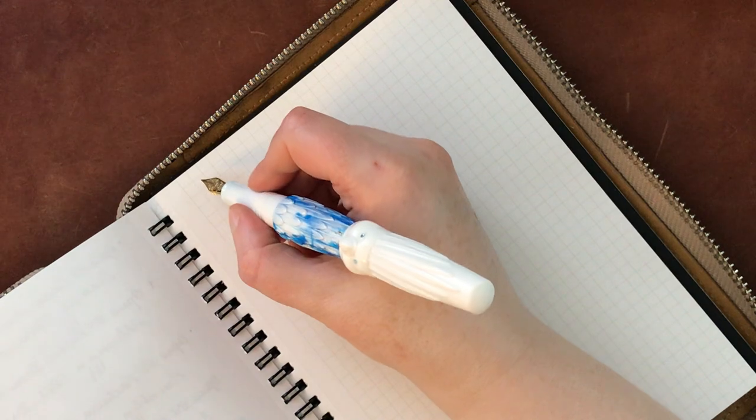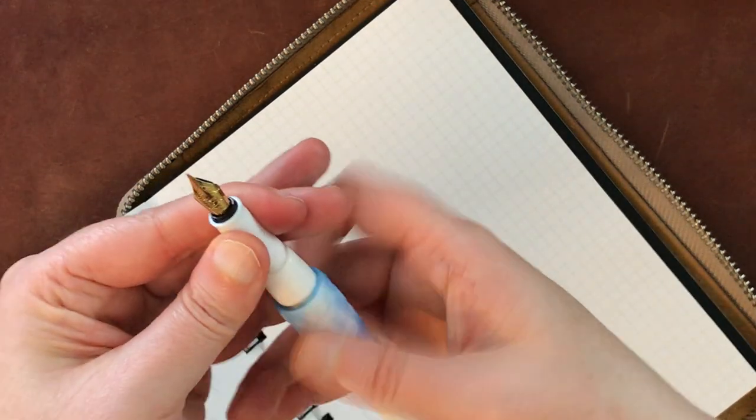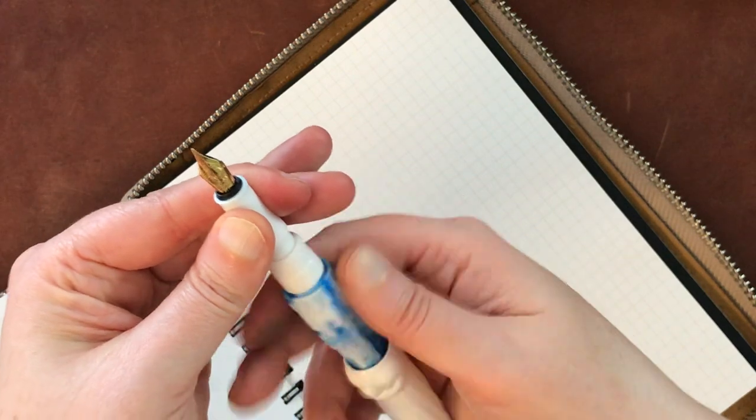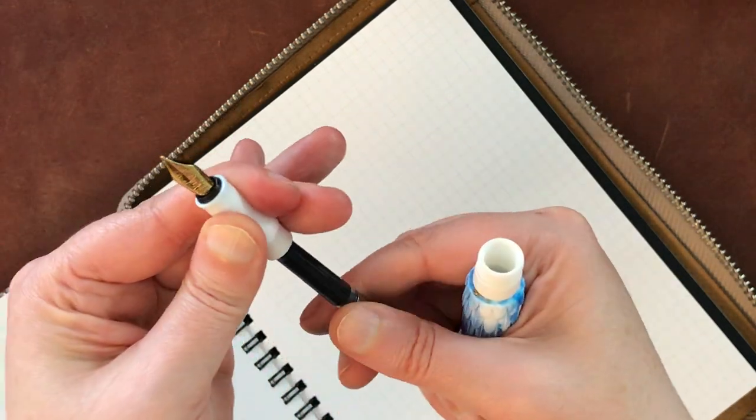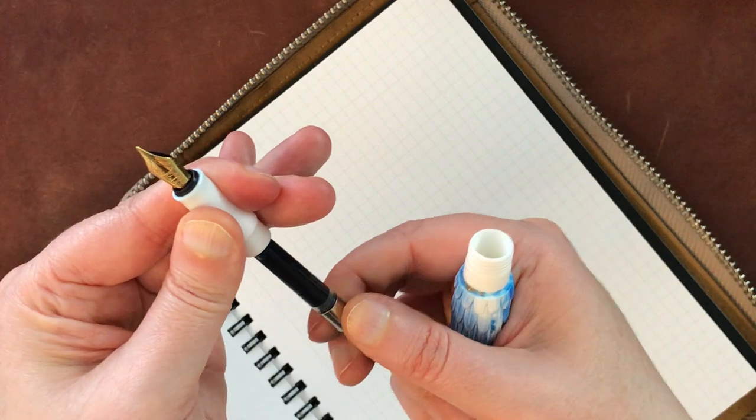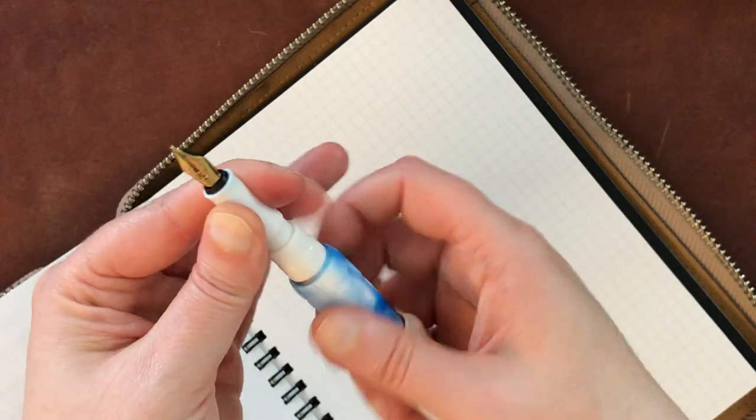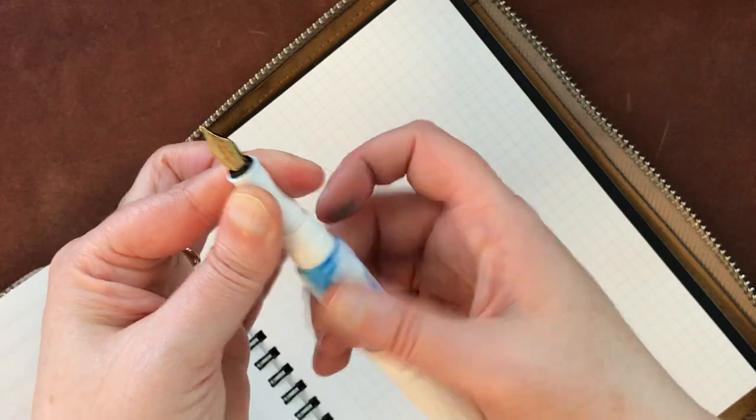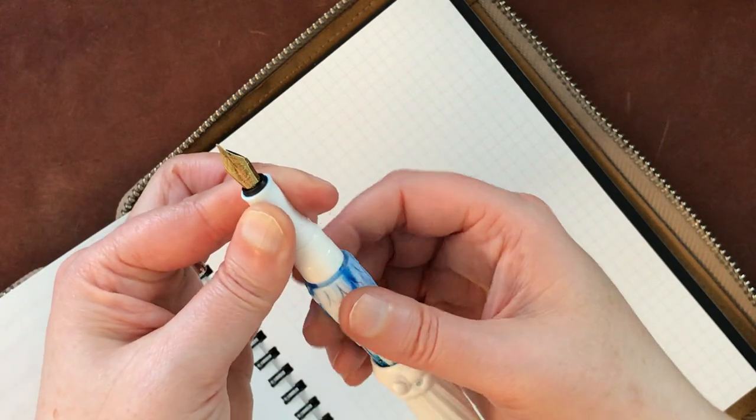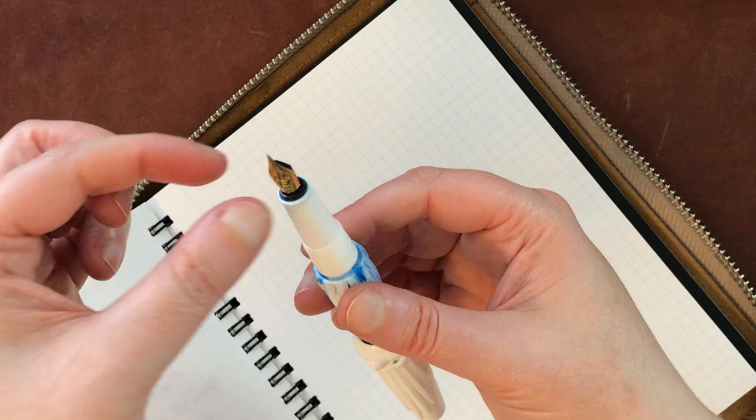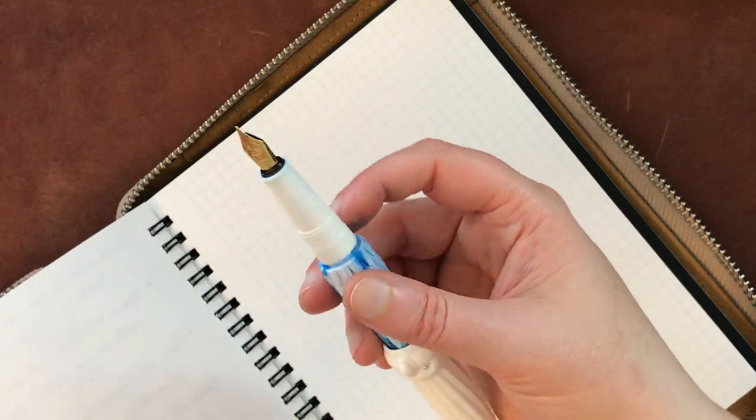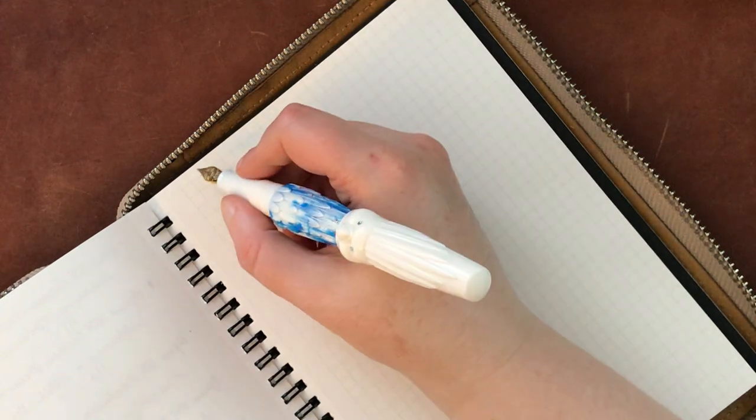One other thing that I noticed about this one that I did not notice with my other Bennu pens is that the converter did not seat as firmly as on some of them. I've never had any problems with the converters on the other Bennus I have, but this one at first seemed a little loose. I tightened the nib up a little, which also seemed loose and that helped. But it was sort of odd that it had that issue.